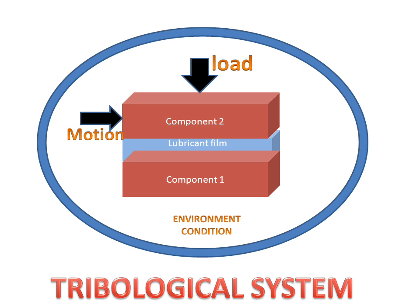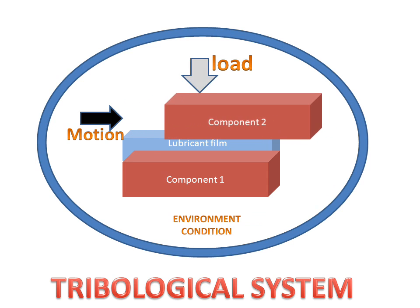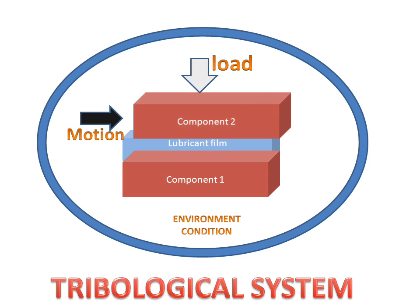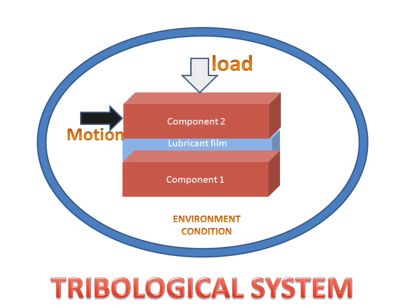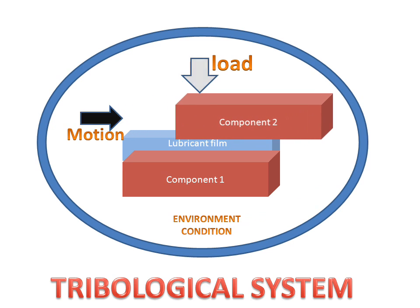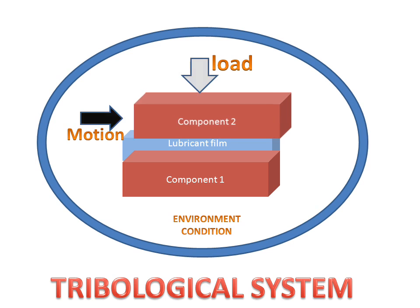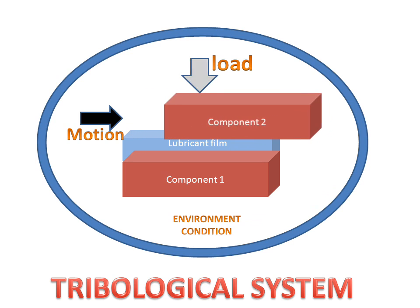Now we will see the working of the components. Load will act on component 2. Component 1 is fixed in its position, and motion will act on component 2. The component will move in the backward and forward direction. The lubricant film will act as a smooth working medium for component 1 and component 2, and we will note the effect of component 2 on component 1 and the lubricant film.